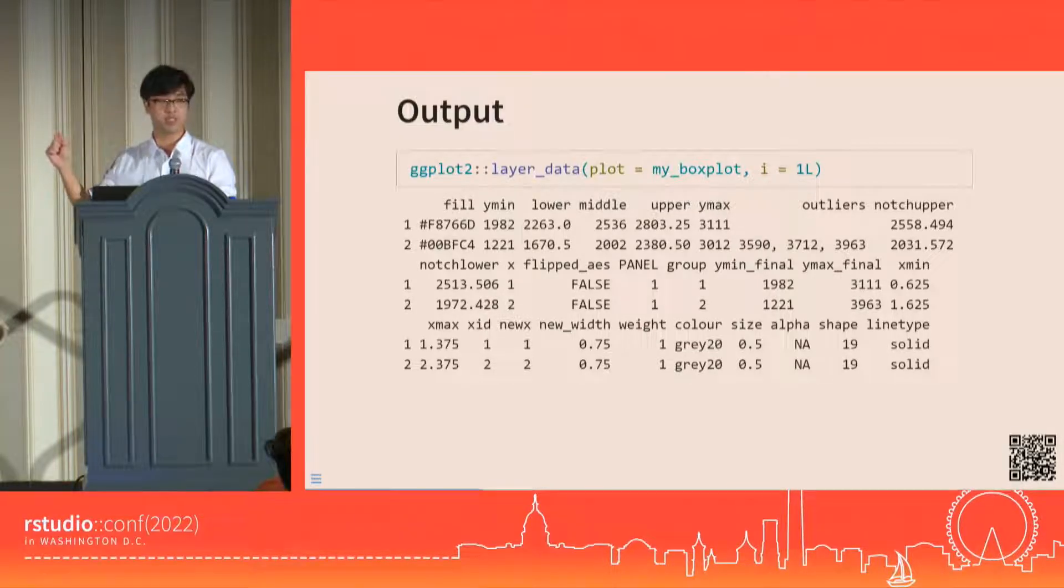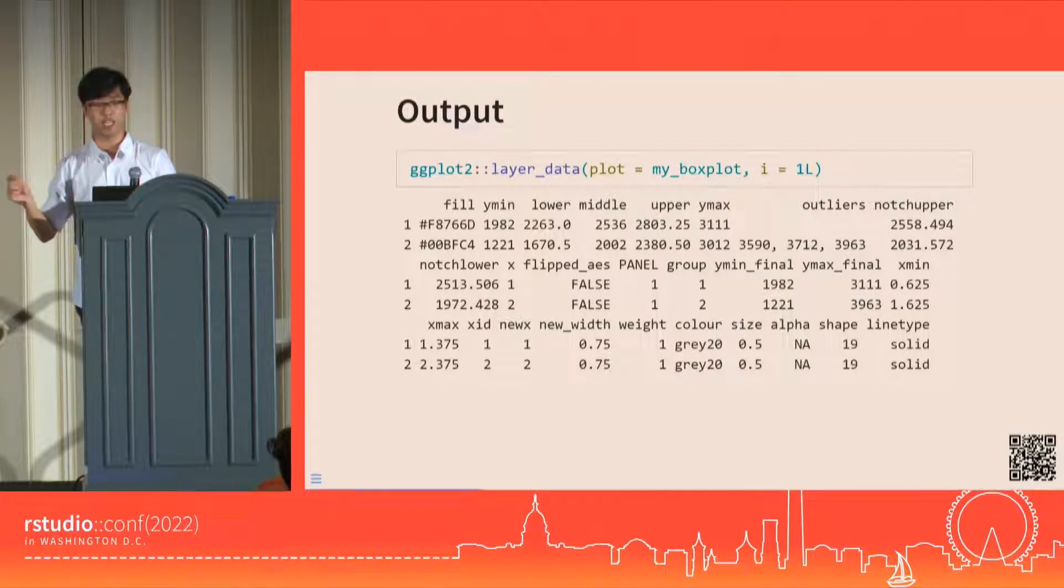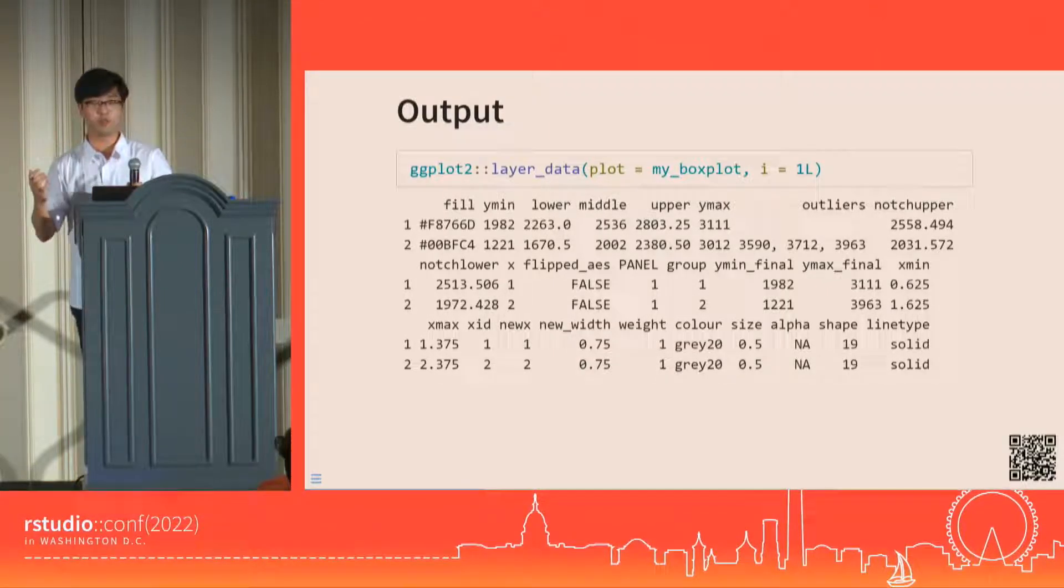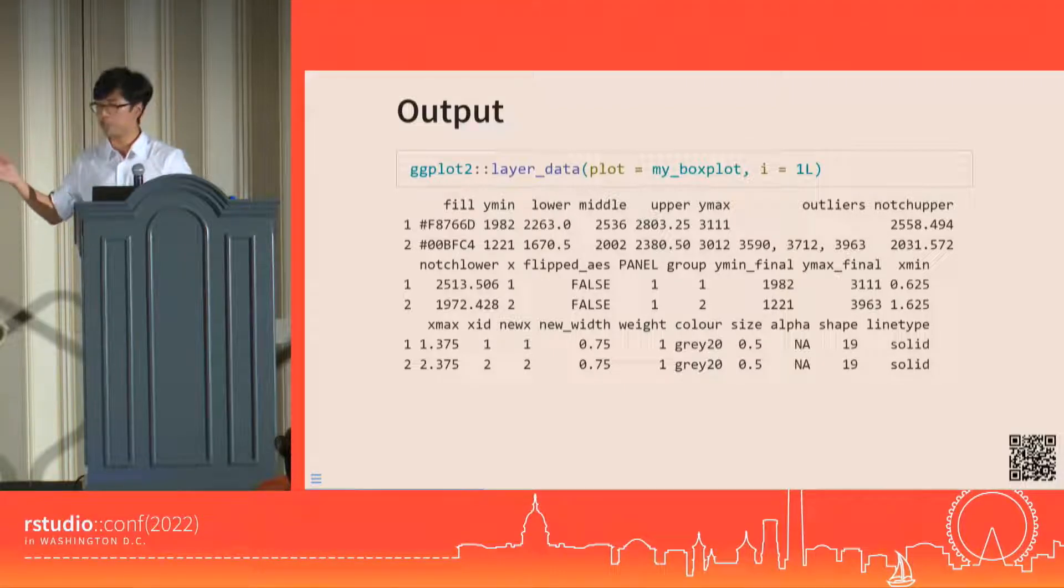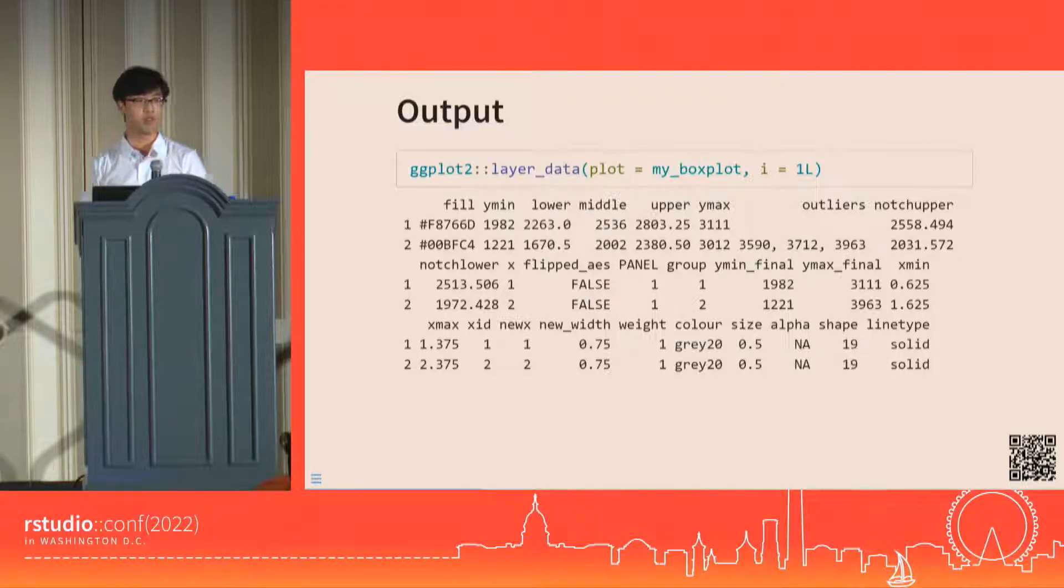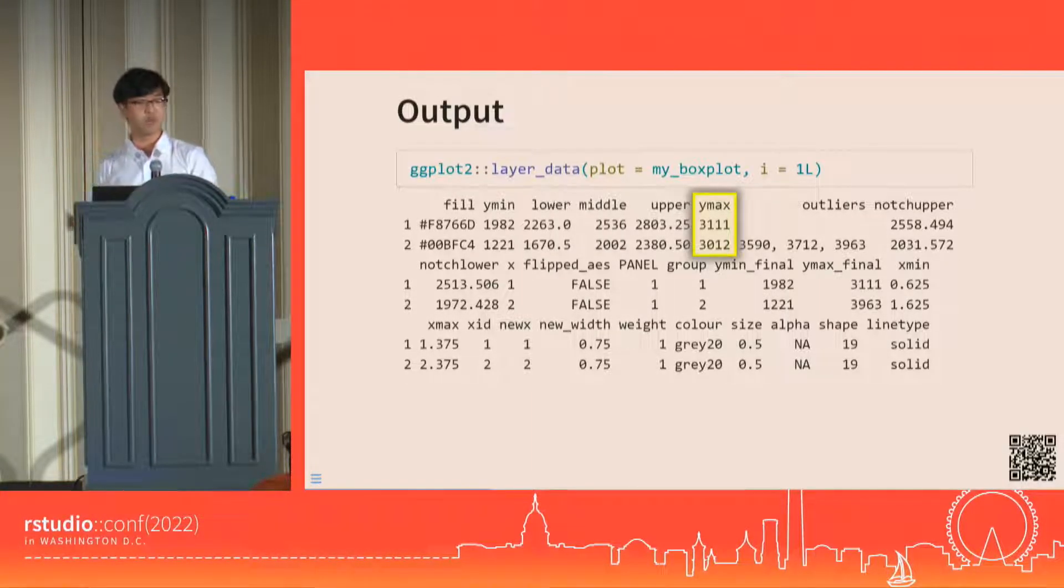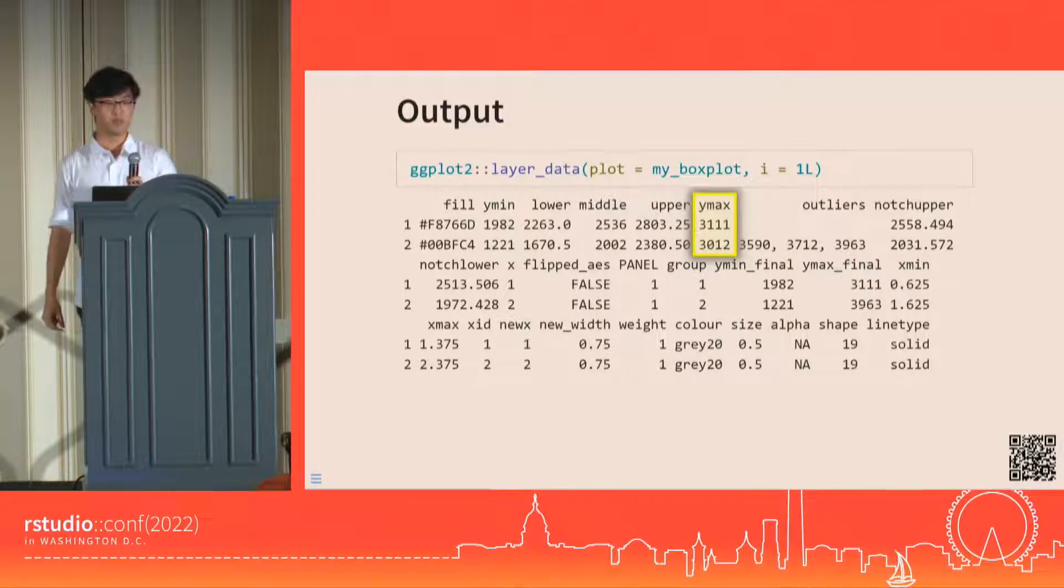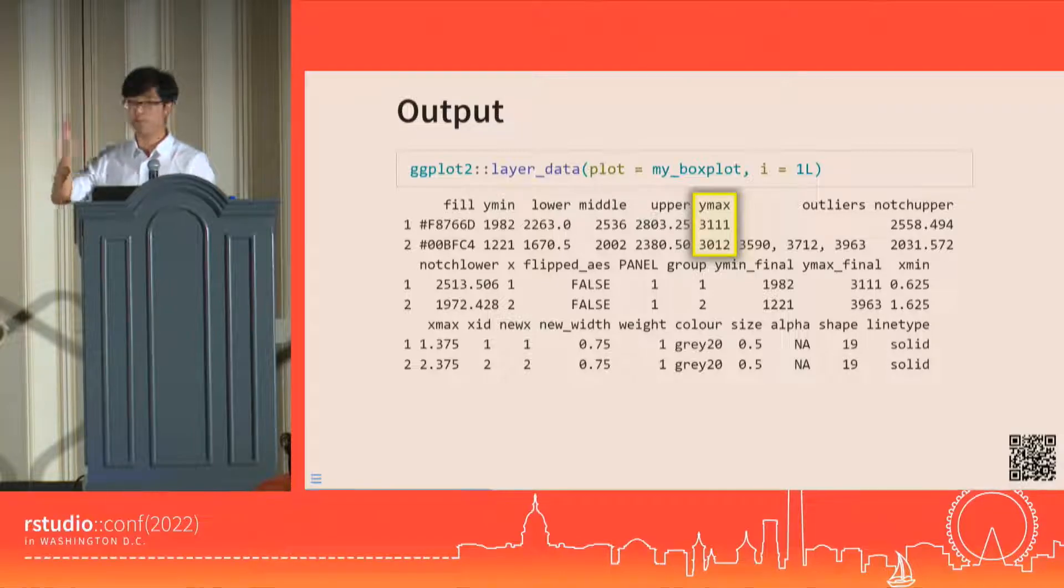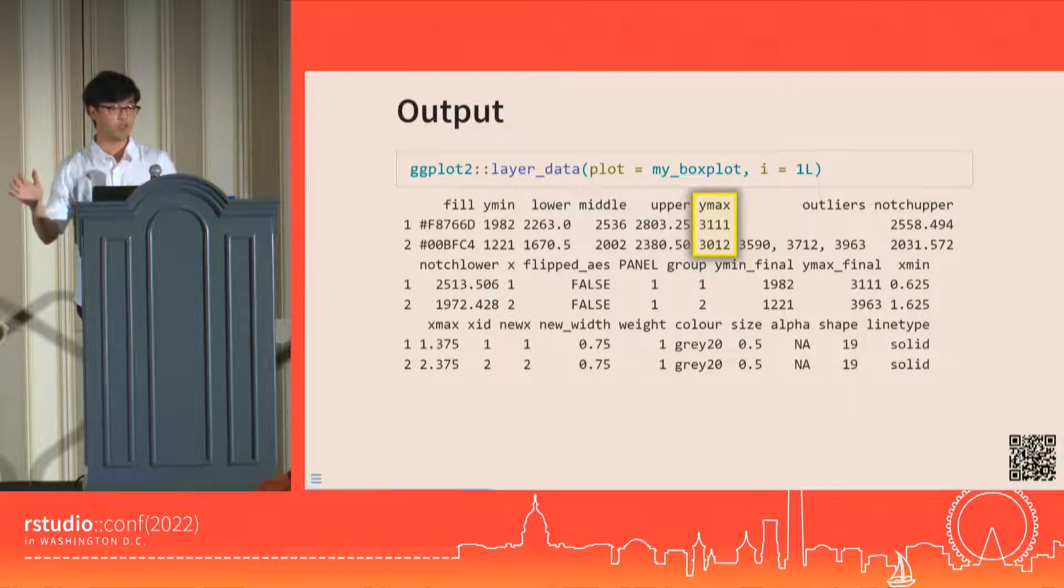But for our purposes, we'll just pretend that all of the internals is a function that just takes the raw data that we give it, which is the experiment data that we provided, and makes it drawing-ready like this, and does this process for every layer in our plot according to each layer's own specifications. This doesn't look too bad, right? Our input was tidy data, and the output is just another tidy data, where each row represents a boxplot, and the columns are aesthetics that describe each boxplot, including the value for the upper whiskers stored in the ymax column.